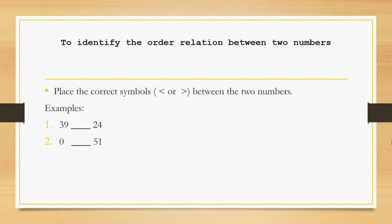We're going to place the correct symbols, such as less than or greater than, between two numbers. For example, we have 39 and 24, and 0 and 51.